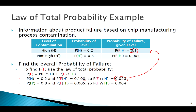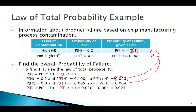For the second line of the table: 80% are not highly contaminated, and only 0.5% of those fail inspection — a very low probability. Putting those together, the total probability of failure is about 2.5% overall. That's the Law of Total Probability at work.